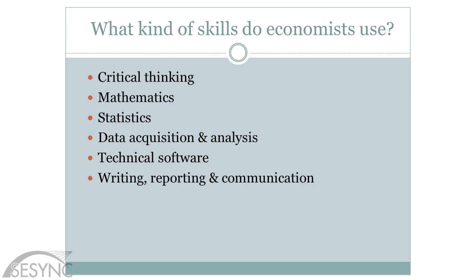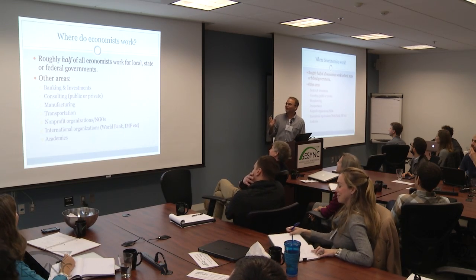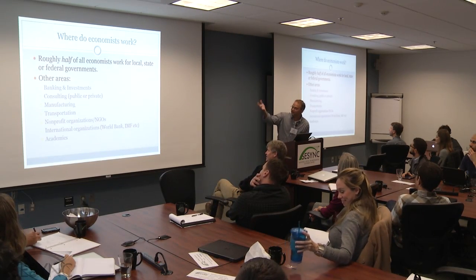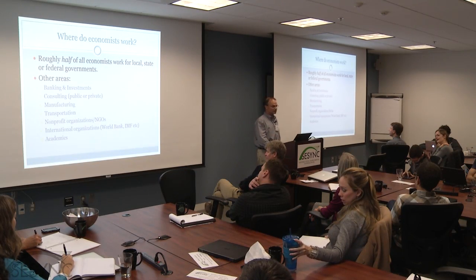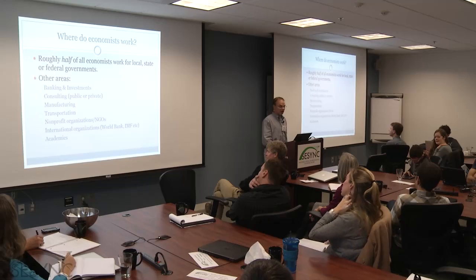What skills do economists use? Critical thinking, math, statistics, a lot of data analysis, technical software, and obviously writing, reporting, and communication are essential. Where do economists work? About half of all economists work for government. Other areas include the private sector — banking and investments, consulting, firms, NGOs, and obviously academia.